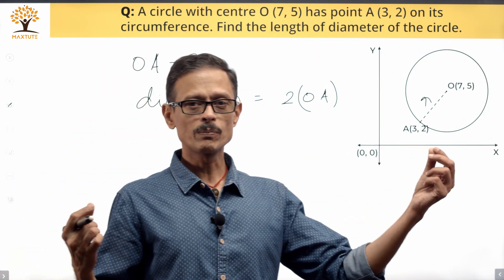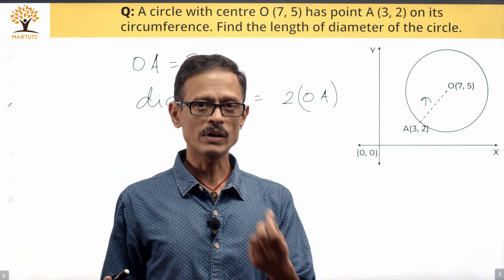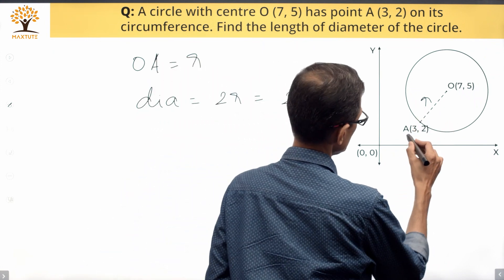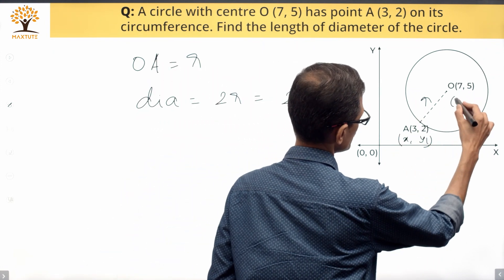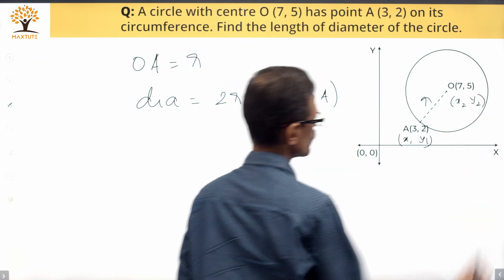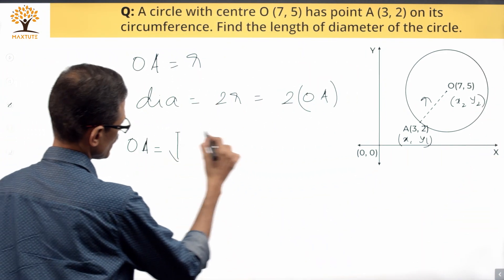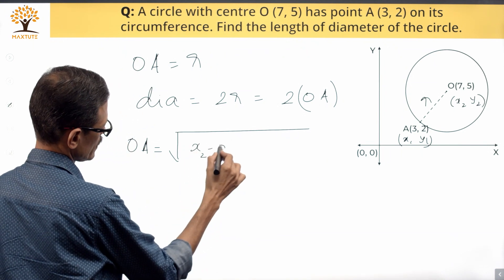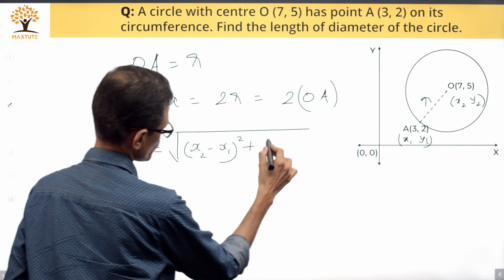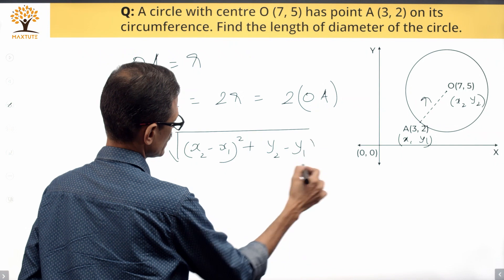The distance between two points whose coordinates are (x1, y1) and (x2, y2). Let's call this point to be (x1, y1) and the coordinates of the center to be (x2, y2). So the distance between these two points OA is given by the formula: square root of [(x2 minus x1) squared plus (y2 minus y1) squared].